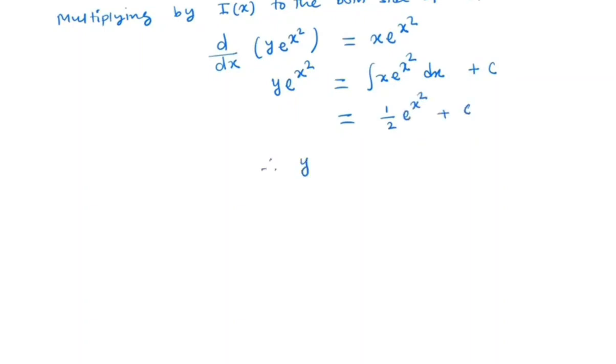So the general solution y is one-half plus C times e to the minus x squared. That's it. Thank you.